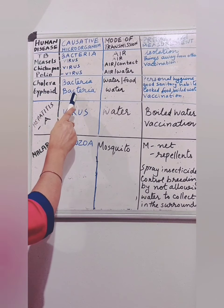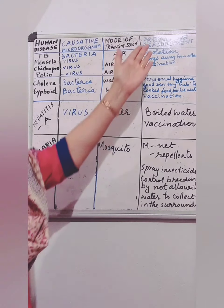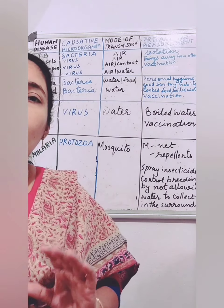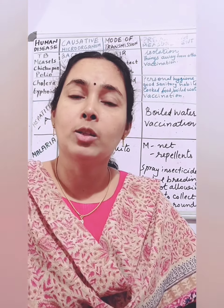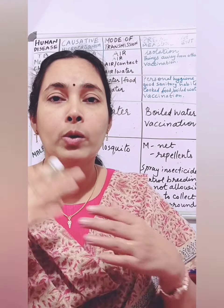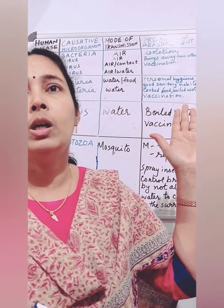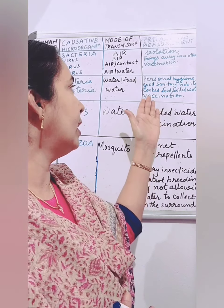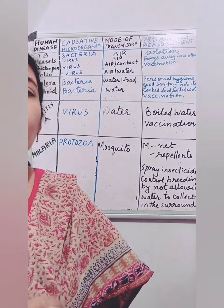Typhoid is also caused by bacteria and spreads through water. Preventive measures include maintaining personal hygiene and good sanitary habits — pass waste only in the toilet and wash hands with soap after using the toilet. You should consume properly cooked food and boiled drinking water. Vaccination can also prevent typhoid and should be given at the proper age.